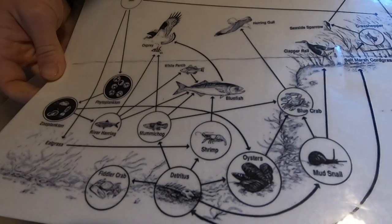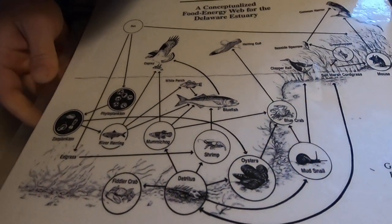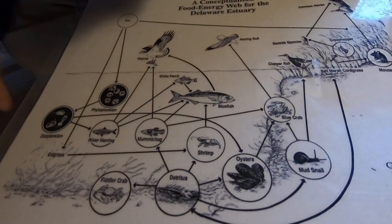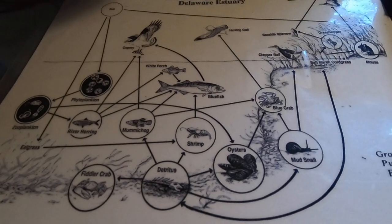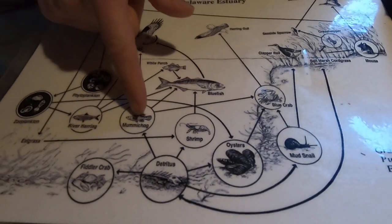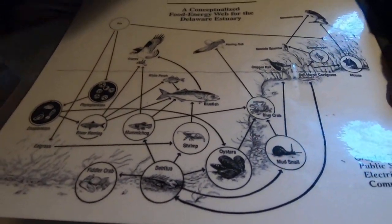Some animals like bluefish are usually going to fall into the same category because they are primarily predators, and so they're going to be eating other animals like shrimp and fish.